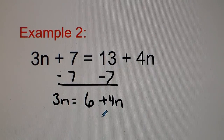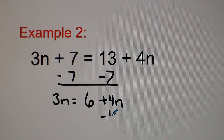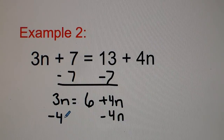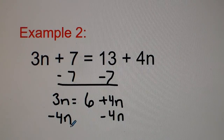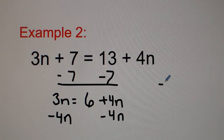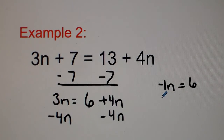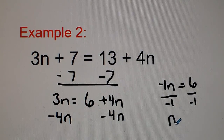The next step is to subtract 4n from both sides. So 3 minus 4 gets us negative 1n, which equals 6. We then divide both sides by negative 1, so we get n equals negative 6.